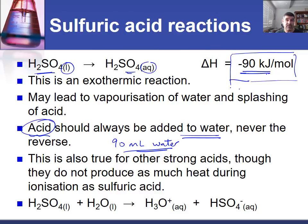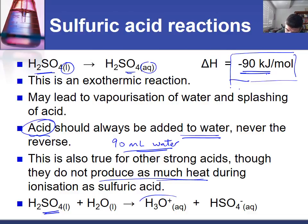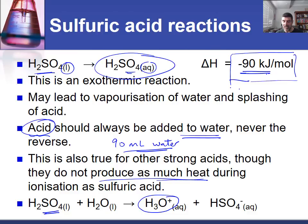Whilst other strong acids like nitric acid or chloric acid are also exothermic during their ionization, they don't produce the same amount of heat as sulfuric acid when it is ionized. With sulfuric acid, because there is no equilibrium — it's a strong acid — it completely ionizes, and therefore all of the sulfuric acid molecules become hydronium ions and hydrogen sulfate or bisulfate ions.